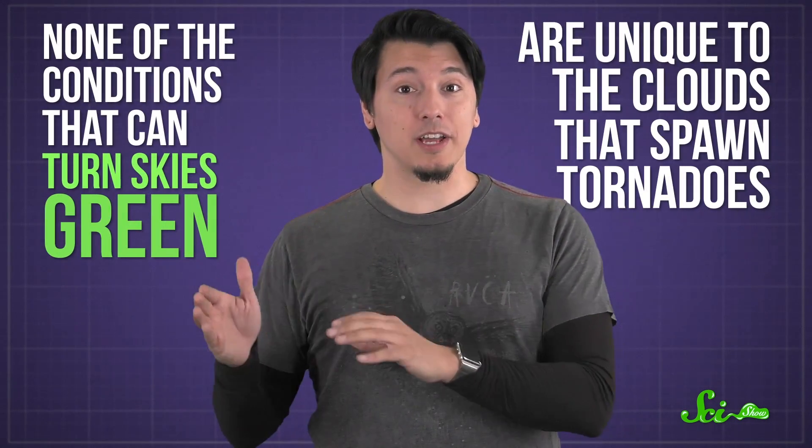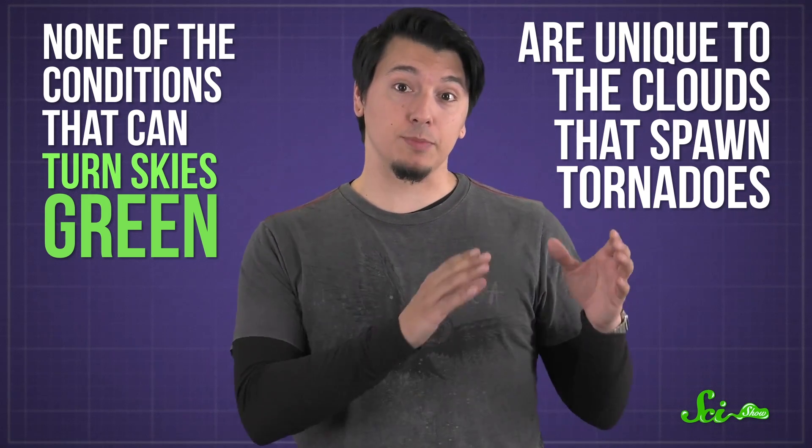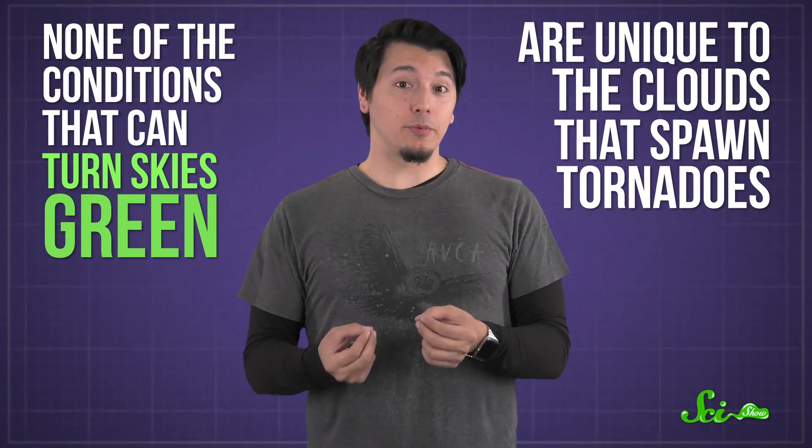Still, none of the conditions that can turn skies green are unique to the clouds that spawn tornadoes. They're often associated with these twisters because the intense storms that produce green-tinted skies can also produce tornadoes, but they don't always. Sometimes they just lead to lots of rain and maybe some hail.